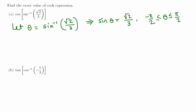Sine is opposite over hypotenuse. So if we have a right triangle in the first quadrant, we can assign: the opposite side B is root 2, and the hypotenuse C is 3, with theta at the vertex.